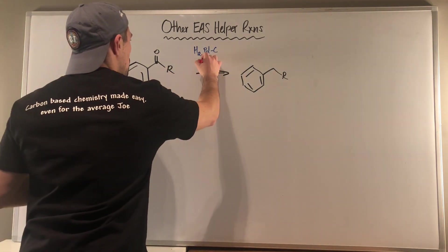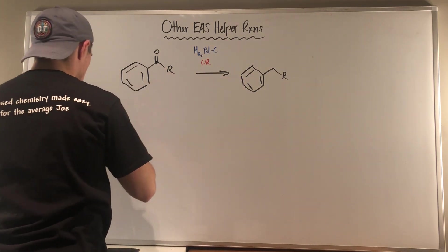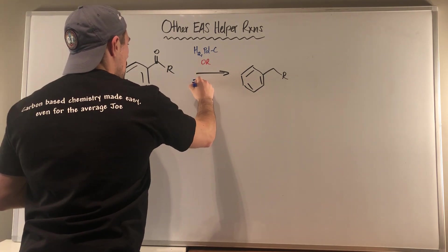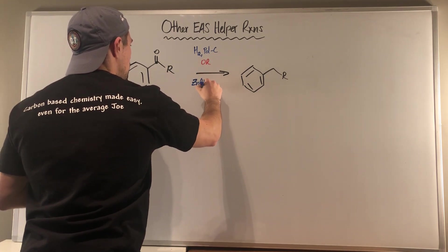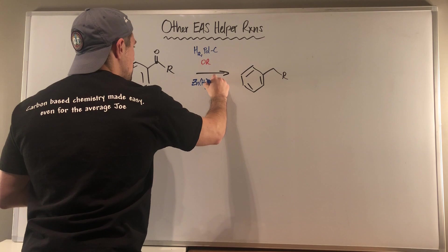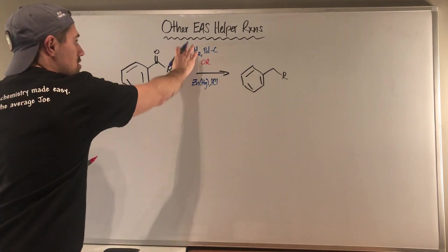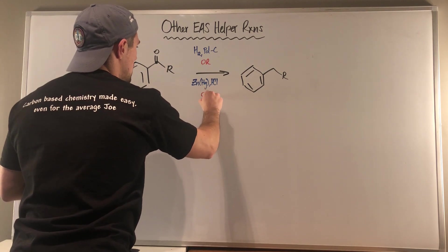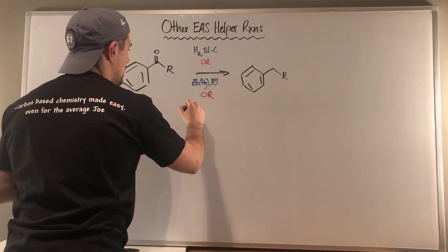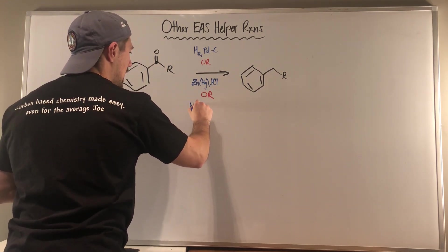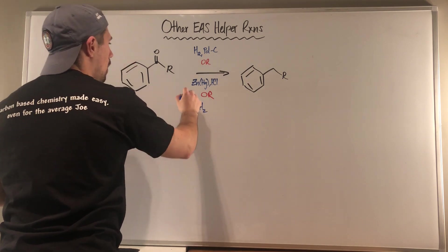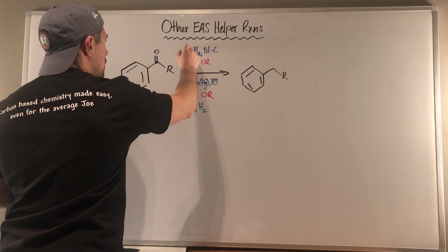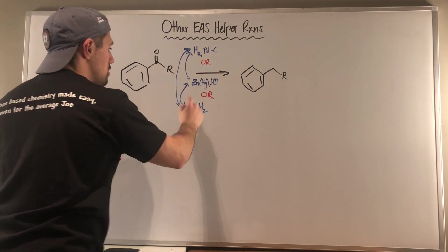You also had the option of doing the Clemmensen reduction, which is a zinc-mercury amalgam with some HCl. That also does the job — they are equivalent. What I forgot to mention is that you can use something called Raney nickel and H2 as well. So all three of these do the same job.